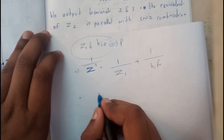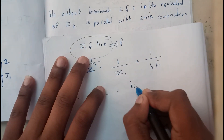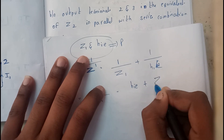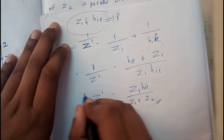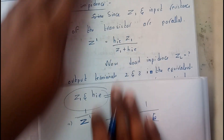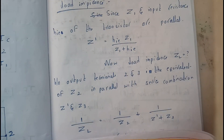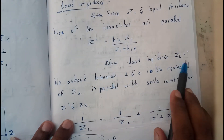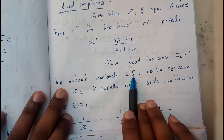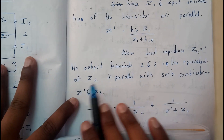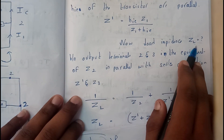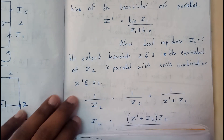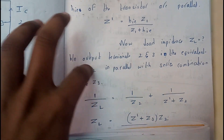1 by Z dash equals HIE plus Z1 divided by Z1 times HIE. So Z dash is Z1·HIE divided by Z1 plus Z2. That is how we get the parallel equation. Now let us assume the load impedance as ZL between terminals 2 and 3 — in the equivalence of Z2 in parallel with the series combination of Z1 and Z3. We can write ZL in terms of Z2, Z dash, and Z3. These two are in series and this part is in parallel.